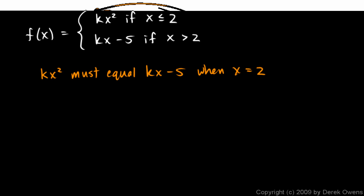If that's the case, then this curve and this curve, which is actually a line, but these two will actually meet up at the same y value when x is 2.